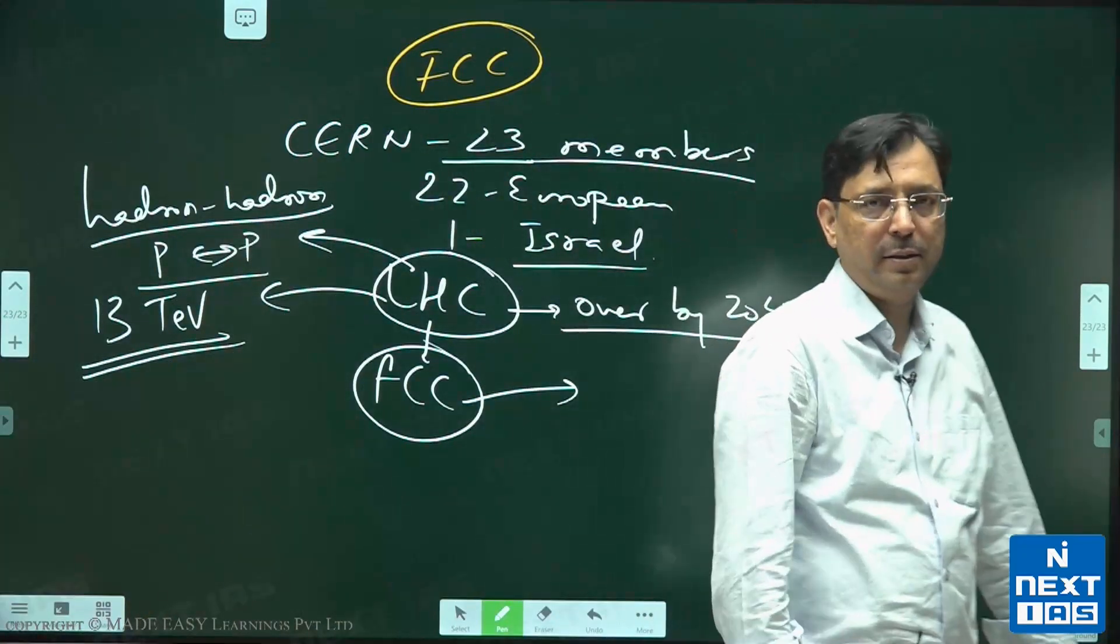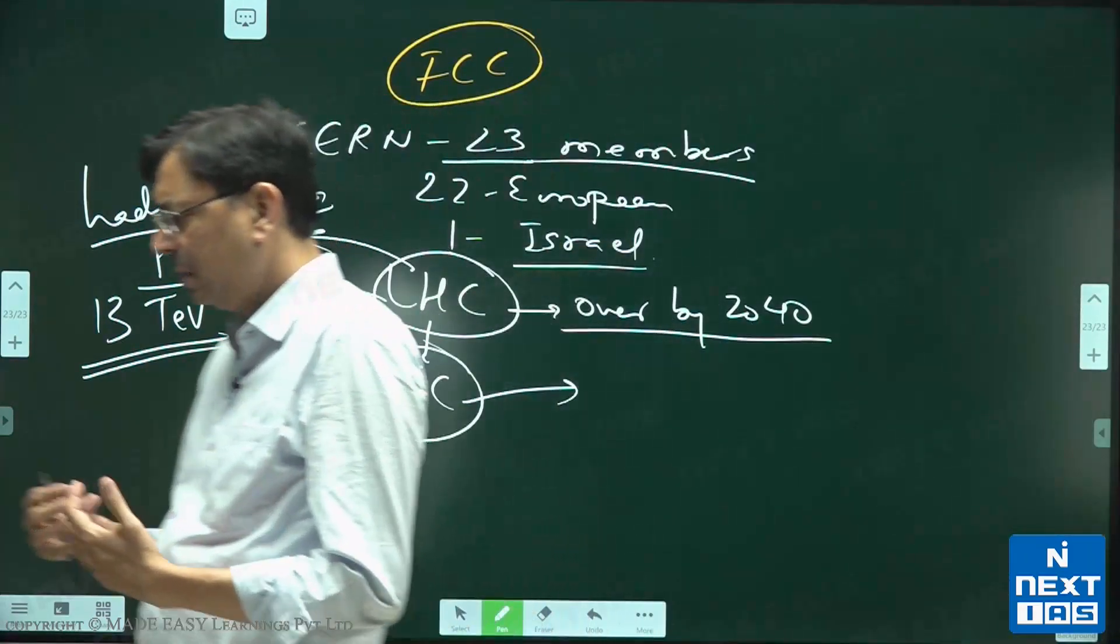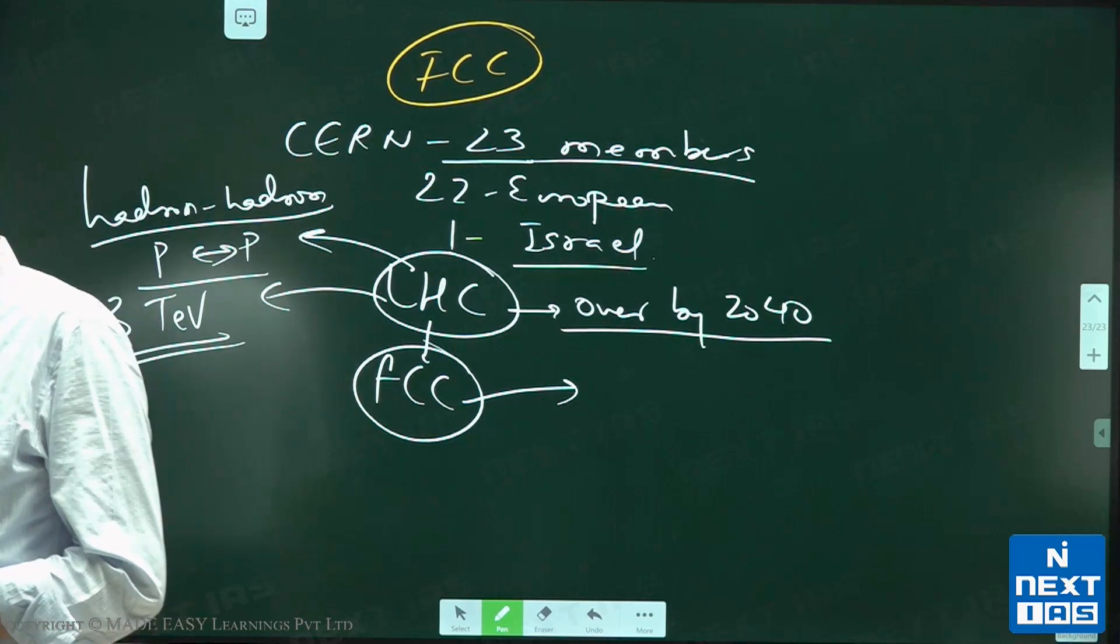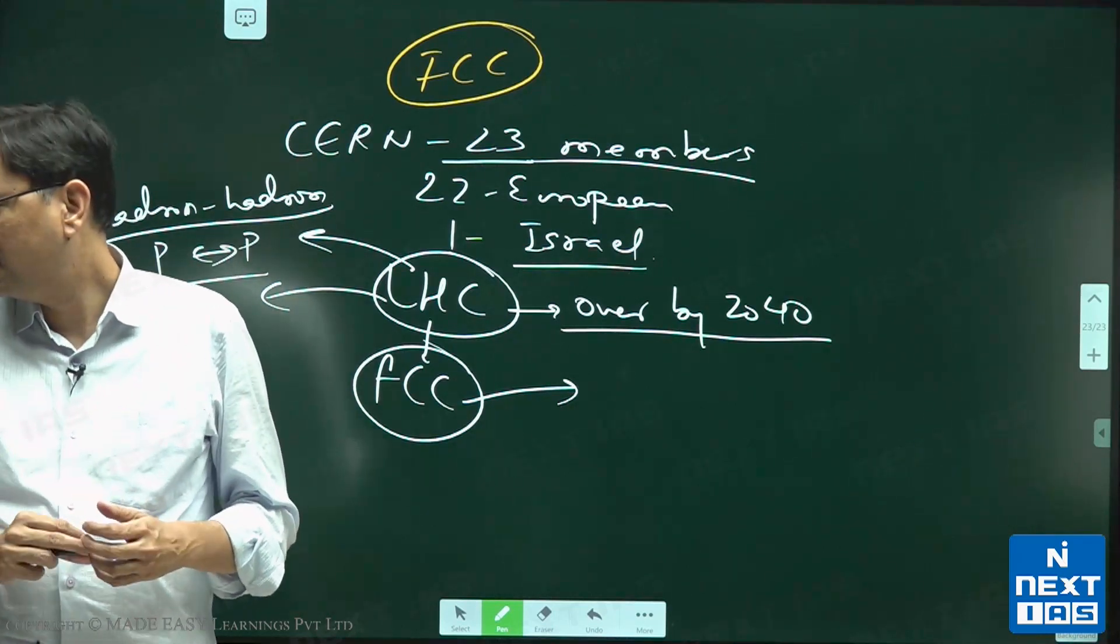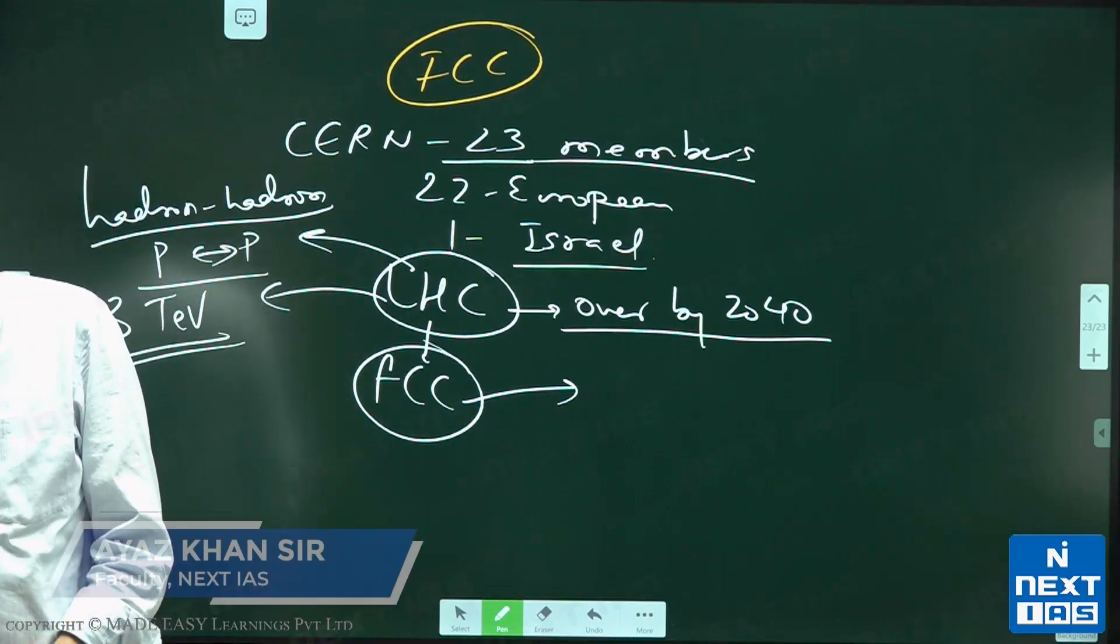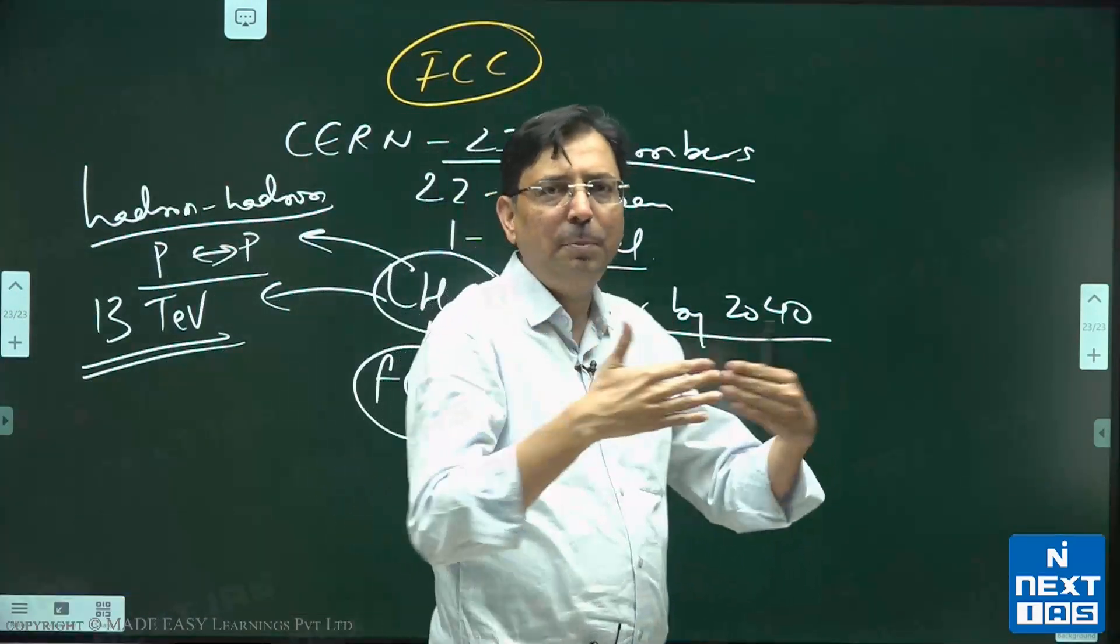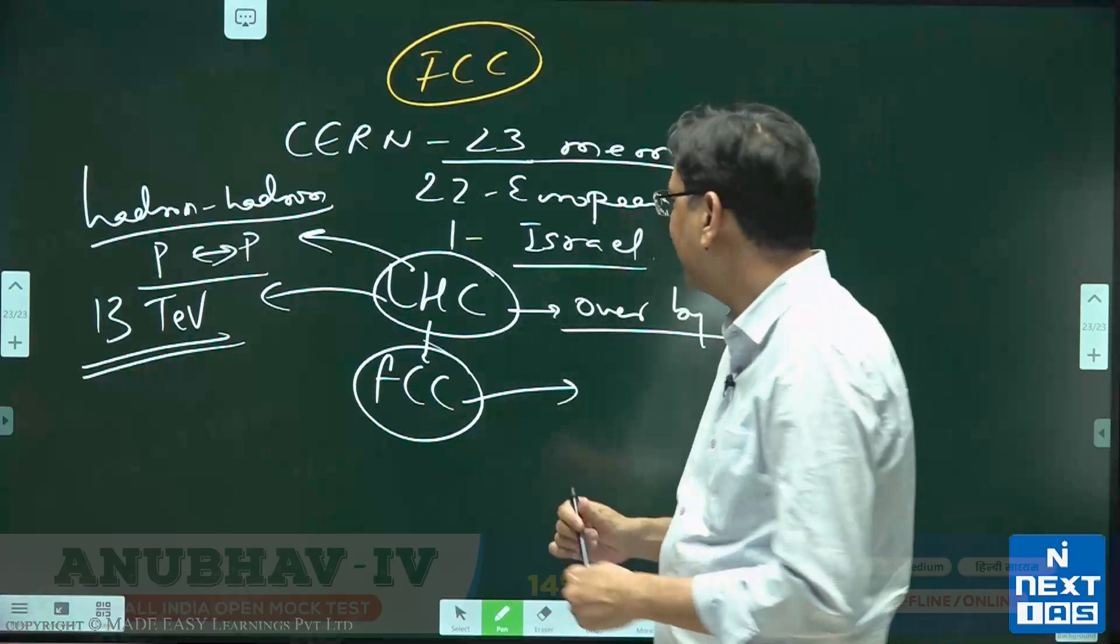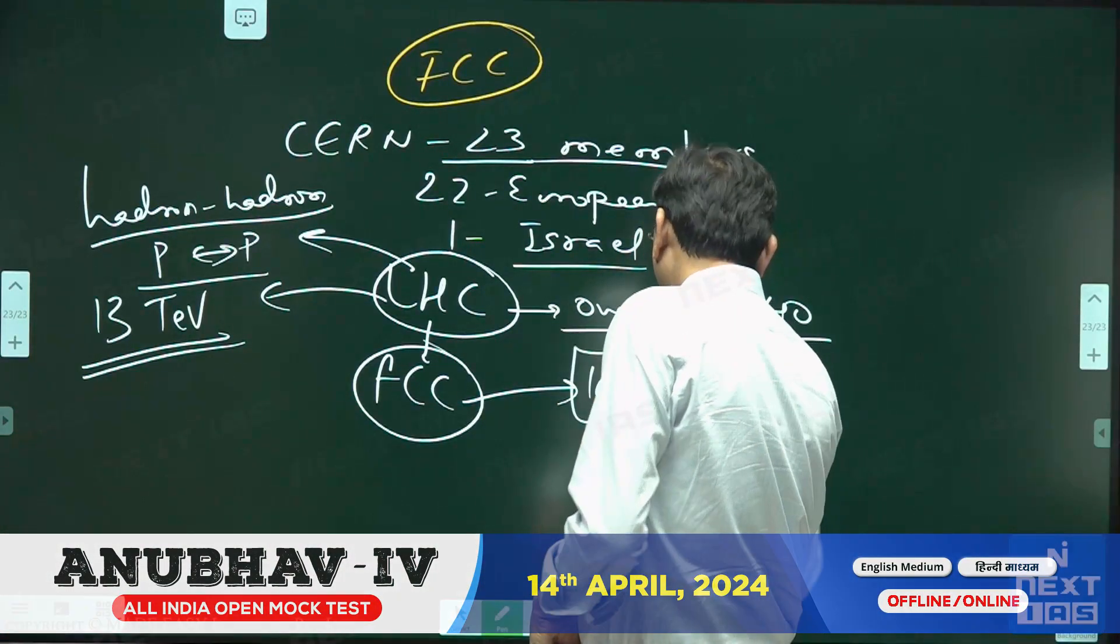In FCC, Future Circular Collider, the combined energy of the beams in case of FCC will be 100 tera electron volts.